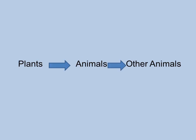A food chain is a chain which is formed when plants are eaten by animals and then these animals are eaten by other animals. A food chain generally always starts with plants at the lowest level. Hence, all animals whether herbivores or carnivores, they directly or indirectly depend on plants for their food.